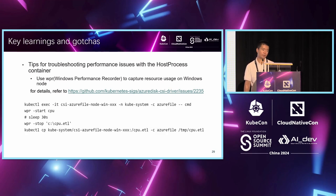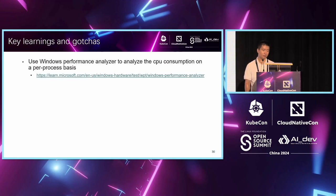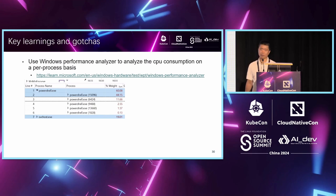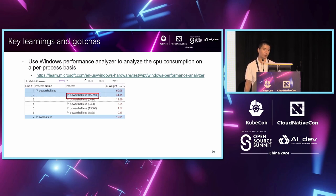First, we used kubectl exec to send a message to the healthy host process container. Then we ran the WPR command to start capturing CPU usage, let it run for 30 seconds, then stopped it. A new file called CPU.ETL was generated. We then copied out that file and used a UI tool called Windows Performance Analyzer to analyze the CPU consumption. From the screenshot, you can see there are around five PowerShell processes which consume 60% of the CPU — a quite significant consumption. The process with ID 15096 consumes 44% CPU on its own.